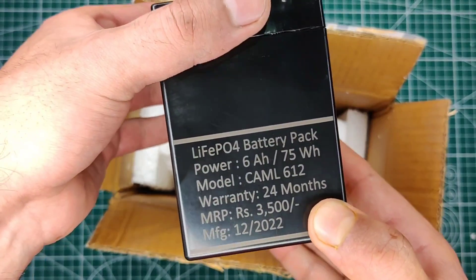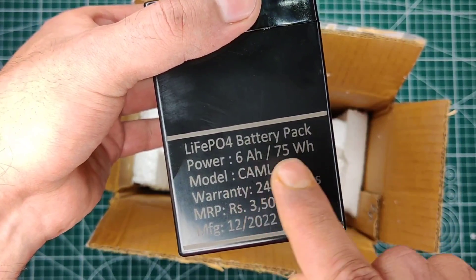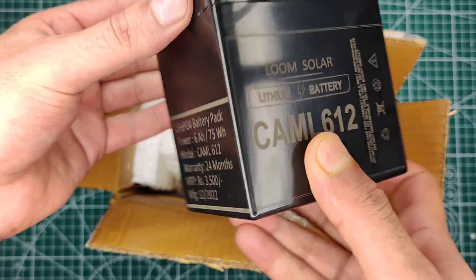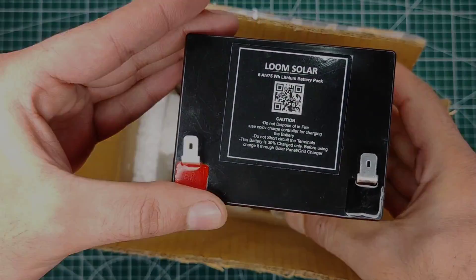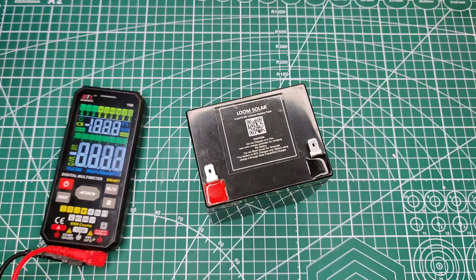And as you can see this battery has also branding from Lume Solar. And this lithium-ion phosphate battery is even better than lithium-ion batteries, in terms of 4 times more cycle life and better safety than lithium-ion batteries.